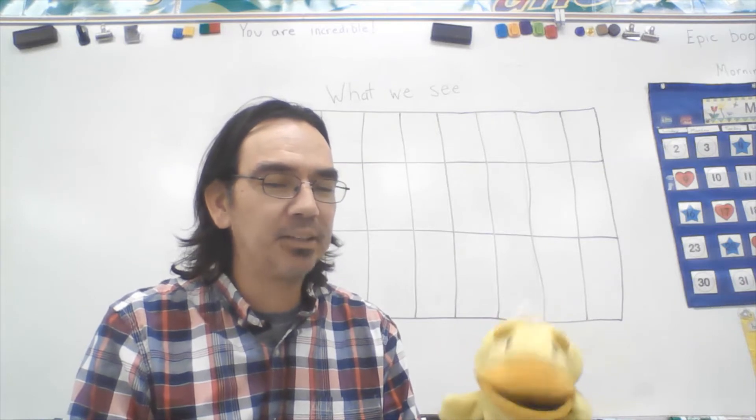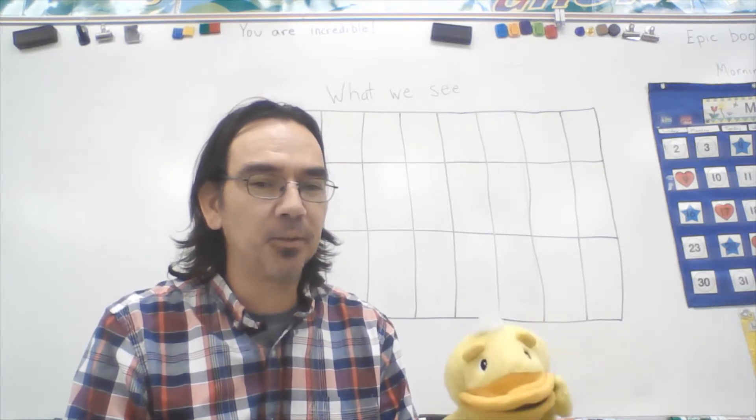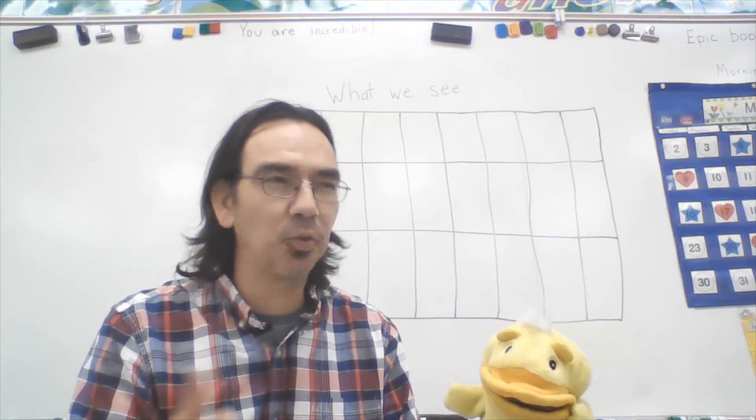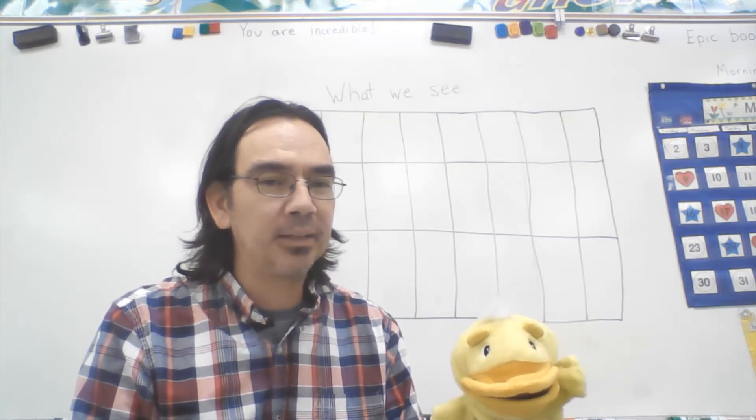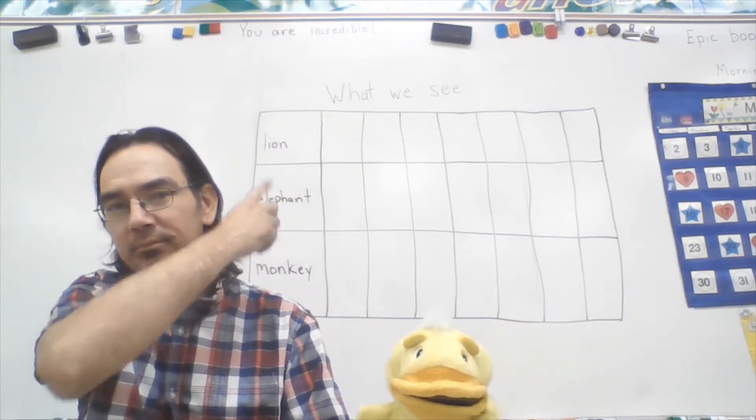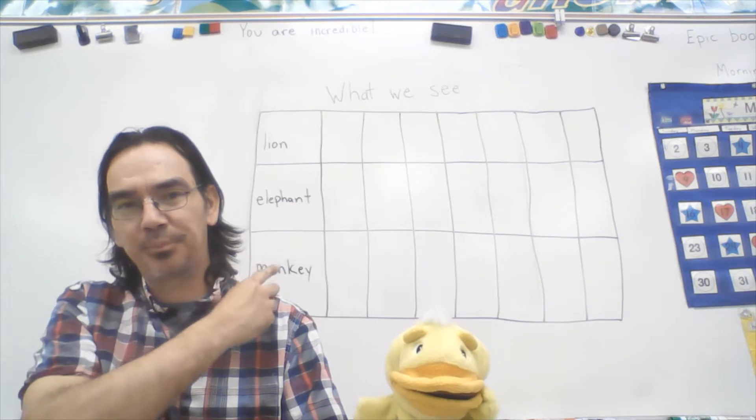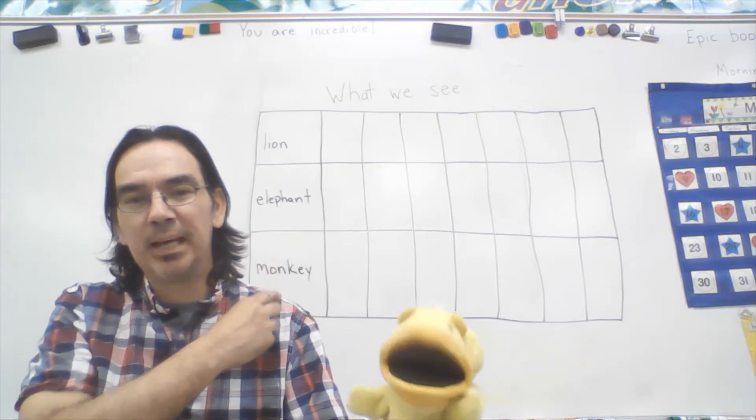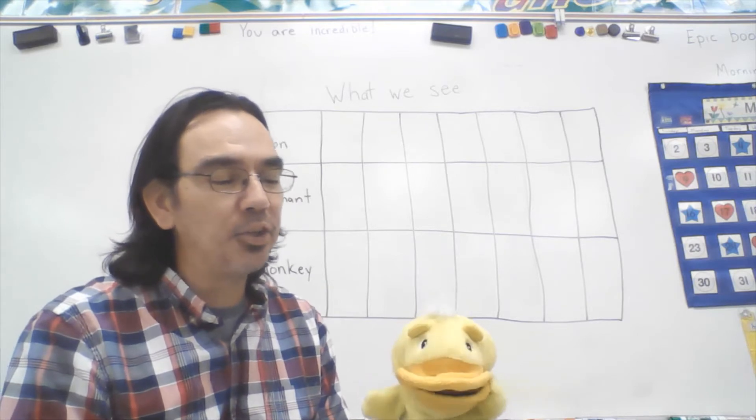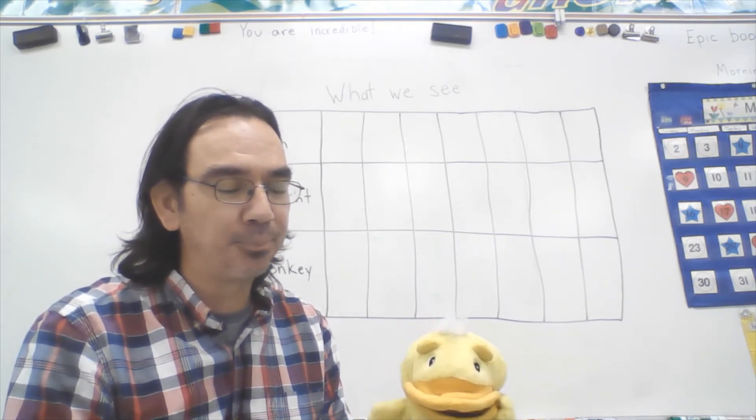Well, this is a chart about what we see. I'm pretending that we took an imaginary trip to the jungle or the Safari to see some different animals. The animals that we're gonna be working with today are lion, elephant, and monkey. Mr. T is gonna fill in some of these boxes here, and then you are going to answer a few questions that I have for you.